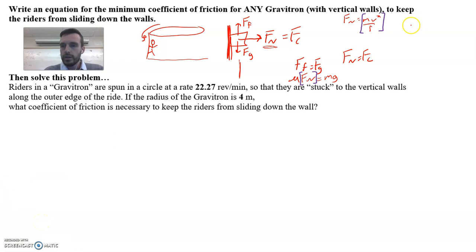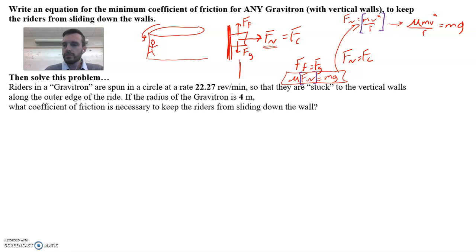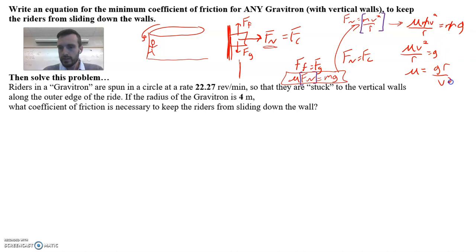If the normal force is MV² over R, I can plug that expression in through substitution, combining those two equations. That results in: mu times MV² over R equals MG. The mass actually cancels, giving us mu times V² over R equals G. Solving for mu, we get mu equals GR over V².